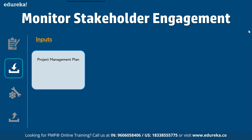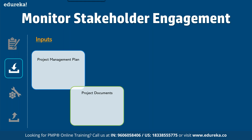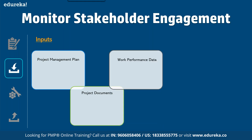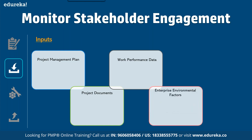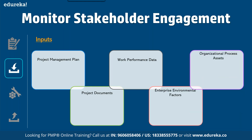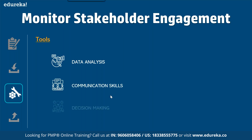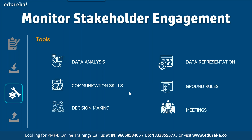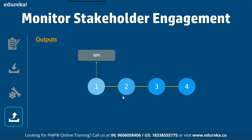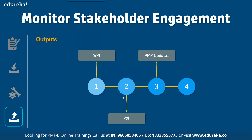The inputs for monitor stakeholder engagement: First is the project management plan — resource management plan, communication management plan, and stakeholder management plan. Second is project documents — issue log, risk register, and stakeholder register. Third is work performance data, containing data on project status. Fourth is enterprise environmental factors — geographic distribution, communication channels, and stakeholder thresholds. Fifth is organizational process assets — standard guidelines, organizational communication requirements. The tools include data analysis, communication tools, decision making, data representation, ground rules, and meetings. The four outputs are: work performance information, change request, project management plan updates, and project document updates.